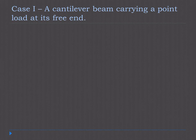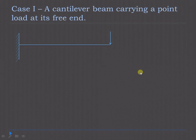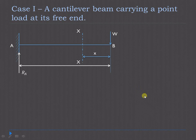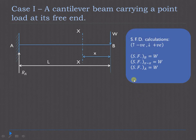The beam is carrying a point load at its free end. This is known as the fixed end of the cantilever, and this is known as the free end, where the load W is acting. Consider any section XX at a distance x from the free end. At the fixed support there will be a reaction RA, and the span length of this cantilever beam is L.